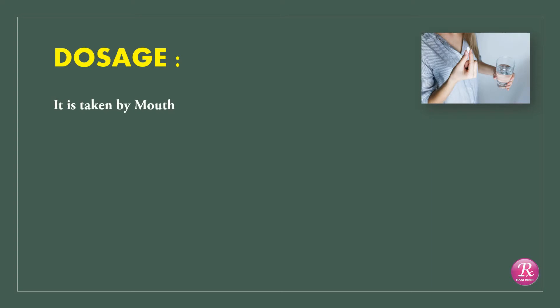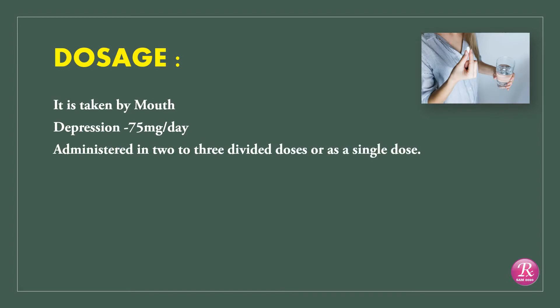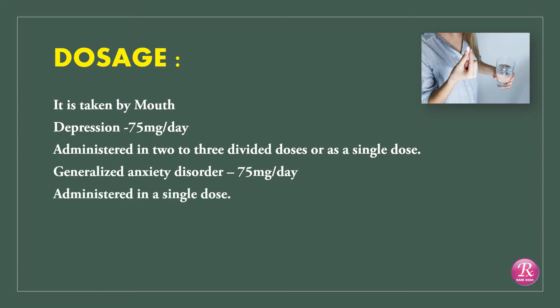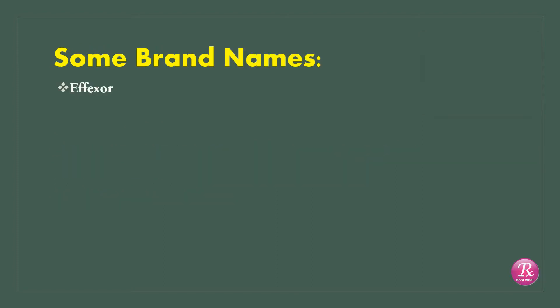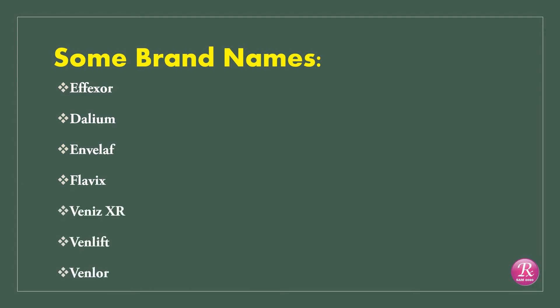Doses: It is taken by mouth. In depression, 75 mg per day administered in 2 to 3 divided doses or as a single dose. In generalized anxiety disorder, 75 mg per day administered in a single dose. Some brand names available in the market: Effexor XR, Dallium, Enlafax, Flavix, Venlafaxine XR, Venlift, Venlor.